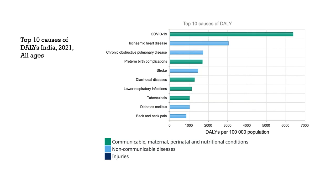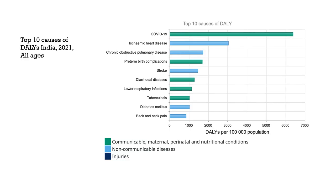Let me take you through some of the DALYs in the context of India, which I found very interesting and downloaded from the Global Burden Disease Study website. This figure shows you the top 10 causes of DALYs in India for the period 2021. DALYs are periodically calculated based upon the GBD study. The recent data is for 2021, which was the period of COVID deaths worldwide as well as in India. The chart categorizes DALYs into three groups: the greens represent communicable, maternal, perinatal and nutritional conditions; the blues are non-communicable diseases; and the dark blues are injuries.